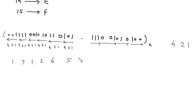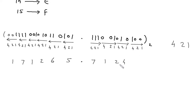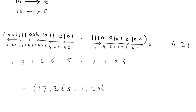Now this will be the octal point — the binary point becomes an octal point. From the octal point going right: the first group gives 7, then 1, then 4 plus 2 = 2, then 4. Combined, we can write this as 171265.7124. Since it is an octal number, its base will be 8.